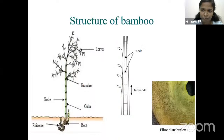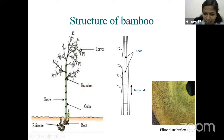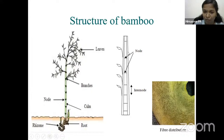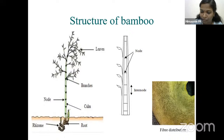Looking at the structure of bamboo, it is not a whole circular tube — it is divided at various locations by transverse diaphragms known as nodes. The distance between two nodes is the internode. Moving from the basal end to the distal end, the internodal distance increases while the diameter decreases towards the tip. At the node, there are transverse ring-type fibers in addition to the longitudinal fibers throughout the length, similar to annular rings in wood.